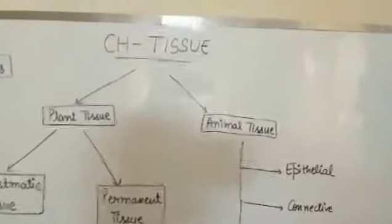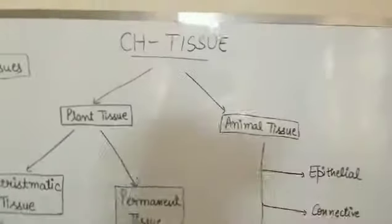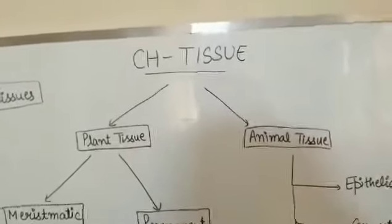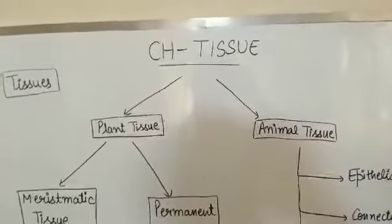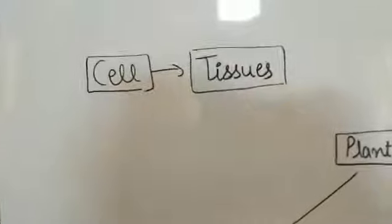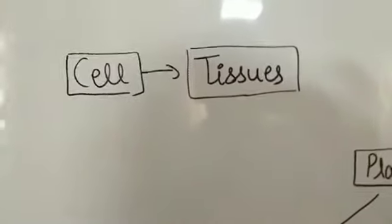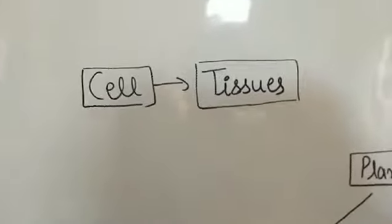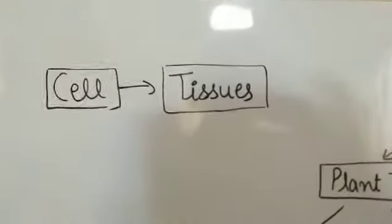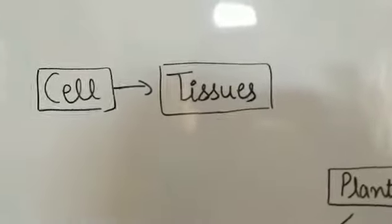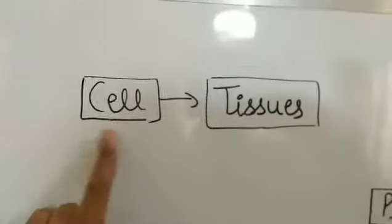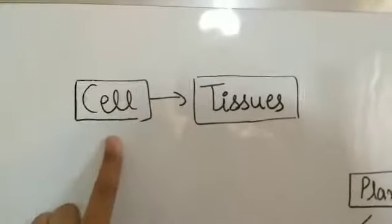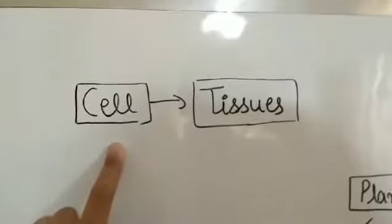Hello everyone. Here I am with a new chapter for Class 9th from the NCERT book. The name of the chapter is Tissue — this is chapter number 7 in the video series and chapter number 6 from the NCERT book. We have already studied about the cell, the fundamental unit of life, including cell structure, functions, and various cell organelles.